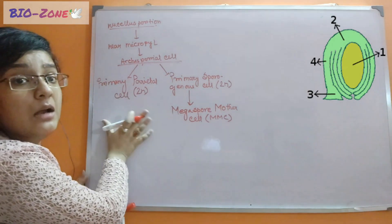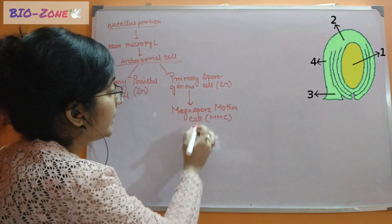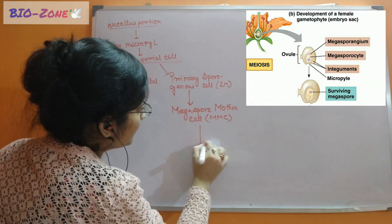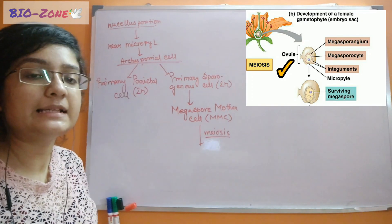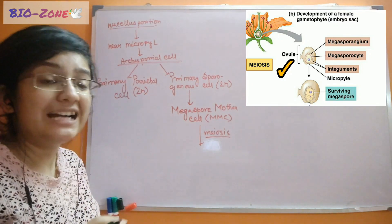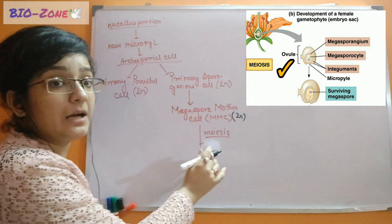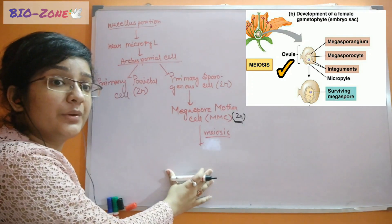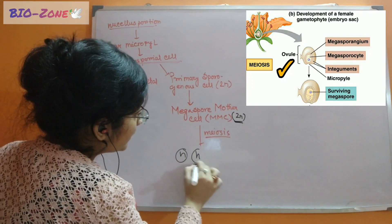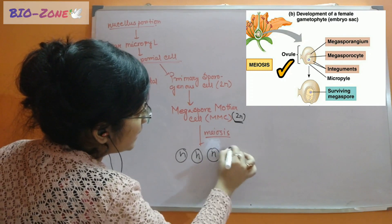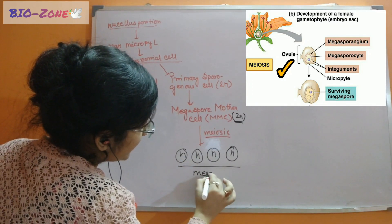The parietal cells will help in producing the remaining cell layer that will protect our egg. Now, the MMC will perform meiosis — a reductional division. That means the diploid number of chromosomes will be reduced. The MMC will perform meiosis and produce four reduced chromosome-set-containing cells. These are called the megaspores.